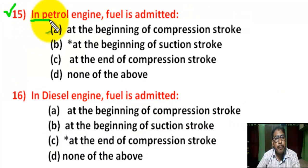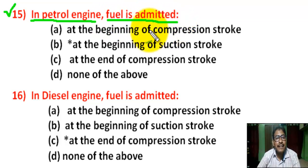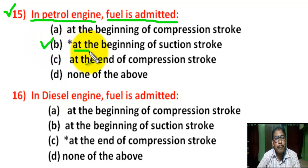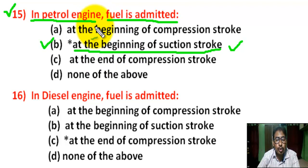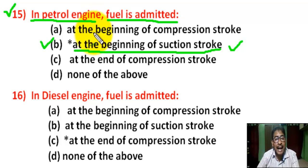Question number 15: In a petrol engine, fuel is admitted — there are four options. Correct answer is B — at the beginning of the suction stroke. During the suction stroke, the suction valve opens and exhaust valve closes. The mixture of fuel and air prepared in the carburetor is drawn into the cylinder.